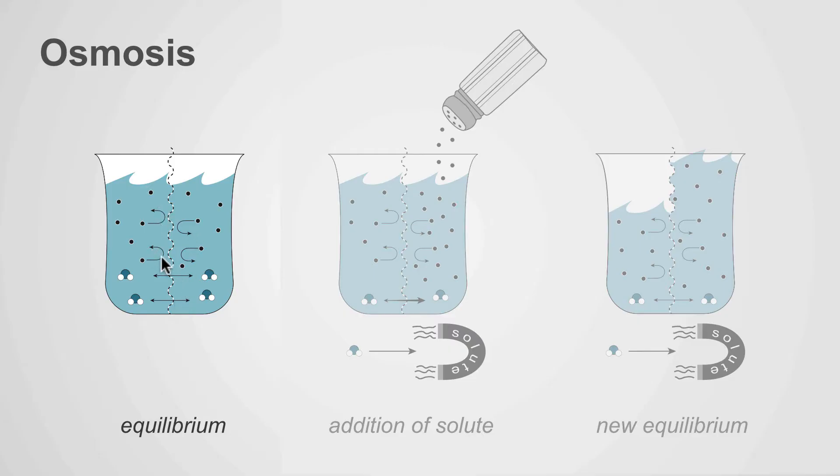We have a semi-permeable membrane dividing the beaker into two. Inside the beaker, there is solute on both sides of these membranes, and that solute cannot cross these membranes. It's impermeable to that solute. Of course, there's also water in the beaker, and that can freely cross the membrane.